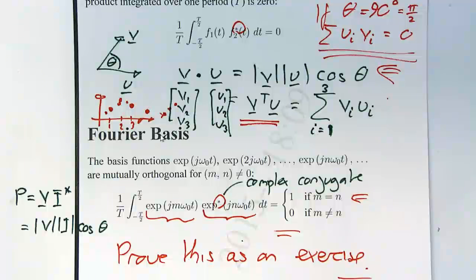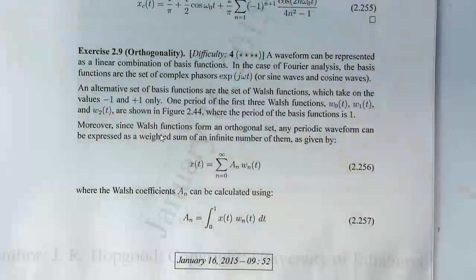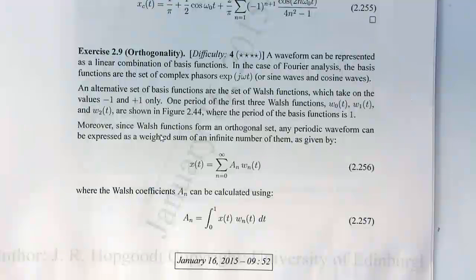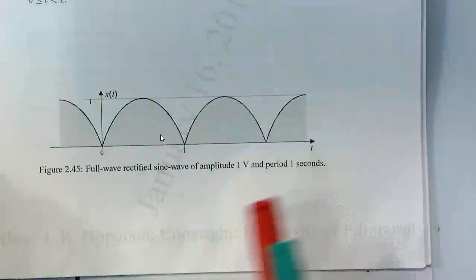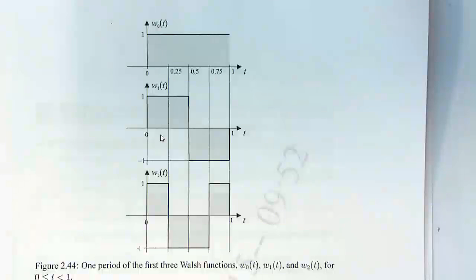Now, what's the point of this orthogonality? Sines and cosines are by far not the only orthogonal set of basis functions. Up till now you've been taught that we can analyse a periodic signal by decomposing it in terms of sines and cosines, but there are alternatives. For example, exercise 2.9 on the tutorial sheet discusses decomposing a rectified sinusoid in terms of Walsh functions. Walsh functions are fascinating because they form an orthogonal basis set.